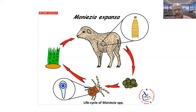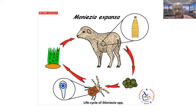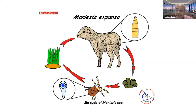Oribatid mites have a typical tendency: during the early part of the day — early in the morning or late in the evening — these mites migrate onto the grass blades because there are dew drops. These are also the timings when animals are usually let loose for grazing, and that is how they readily become infected with oribatid mites containing infective stages of Moniezia and other tapeworms.